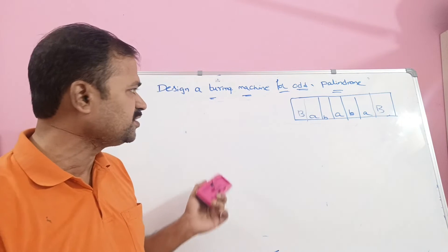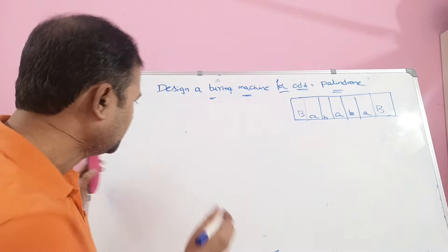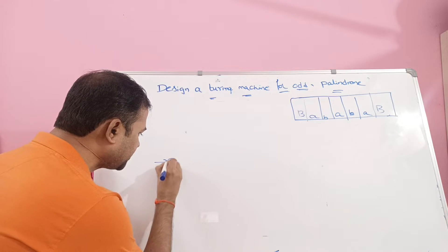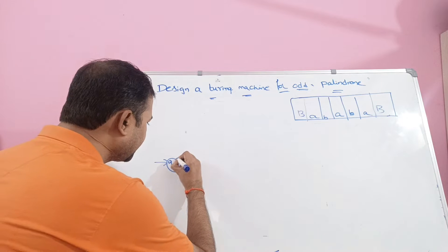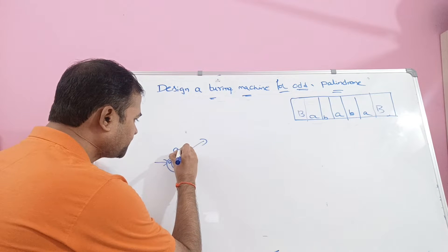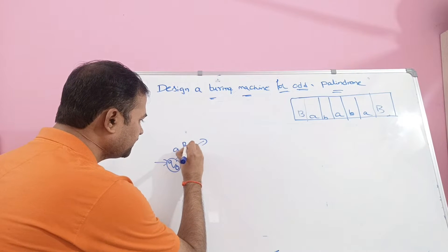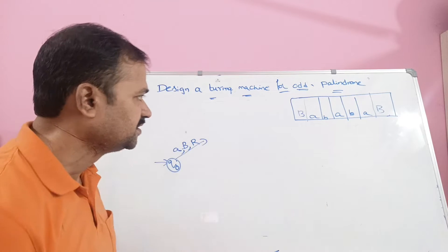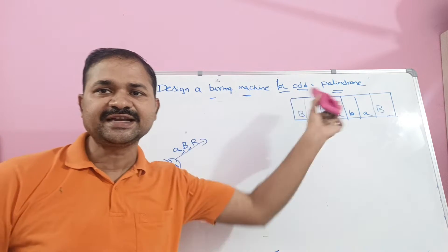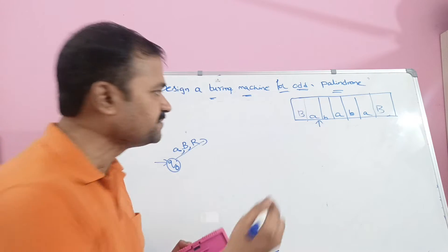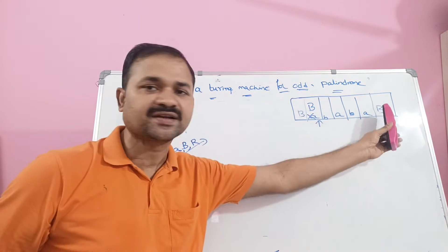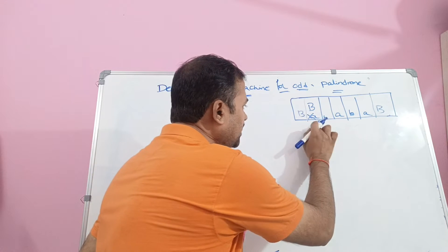Let us consider the Turing machine and in parallel we will see the logic. Initially we are at Q0, which is the initial state. If we apply A on Q0, then that A will be converted into the blank symbol, and we move the read/write head towards the right until we get the blank symbol.